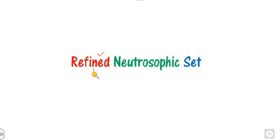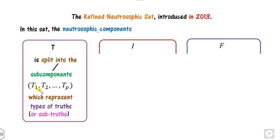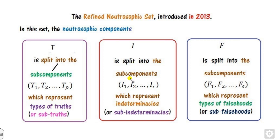A more important concept in Neutrosophic theory is the Refined Neutrosophic Set. In this set, proposed in 2013 by Professor Smarandache, T, I, and F are each split into multiple sub-components. T is split into p components (each representing a degree of truth), I is split into r components representing indeterminacy, and F is split into s components representing falsity.